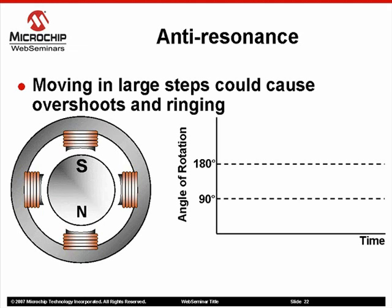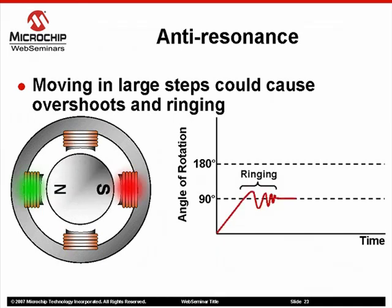Looking at the above diagram, on the left is a simple permanent magnet motor. On the right, a graph that will be used to represent angular rotation of the rotor. When a step is executed, the rotor shaft will undergo a period of time where a ringing occurs before finally settling at the energized stator pole pair.